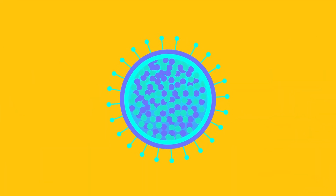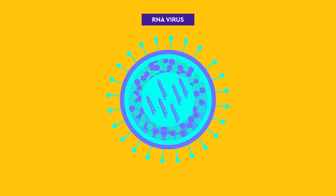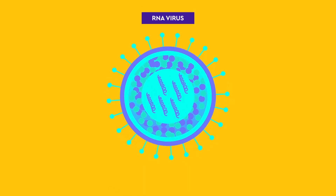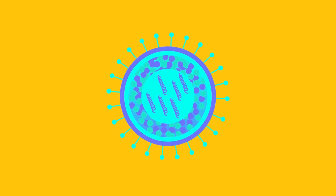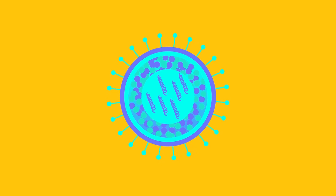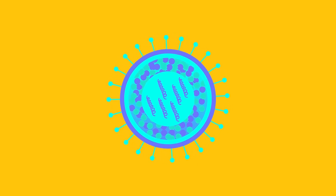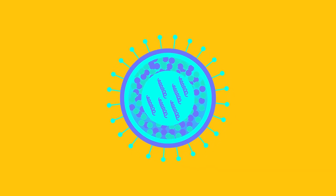Dengue is an RNA virus in the family Flaviviridae. It has four different antigenic varieties. Infection with one type provides lifelong immunity to that type, but only short-term immunity to the other types. If you get a subsequent infection with a different type, it increases the risk of developing severe complications of dengue.